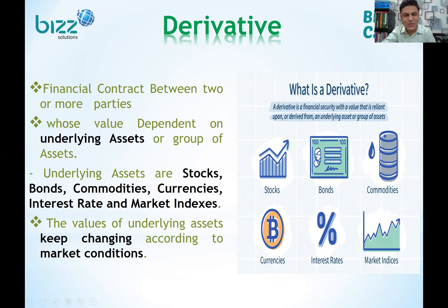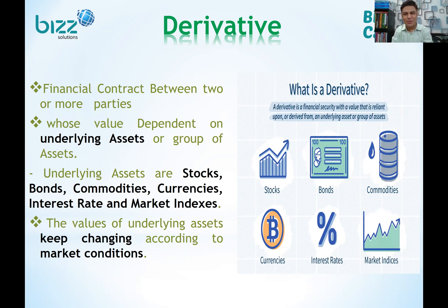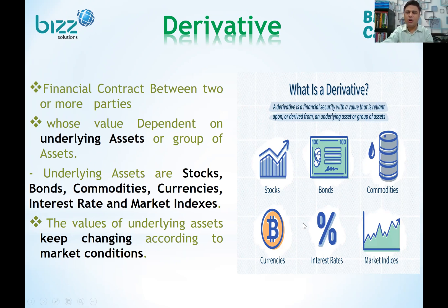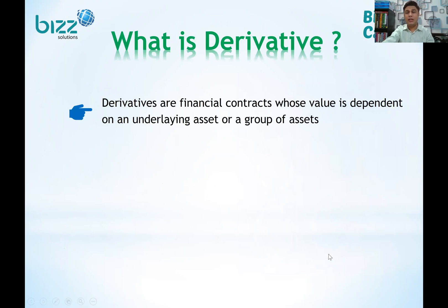What is the underlying asset? It can be a stock, bond, commodities, or currencies. The value of the underlying asset keeps changing according to market conditions. Therefore, the derivatives are financial contracts whose value depends on the underlying asset or group of assets — including bonds, stocks, commodities, currencies, interest rates, and market indices.